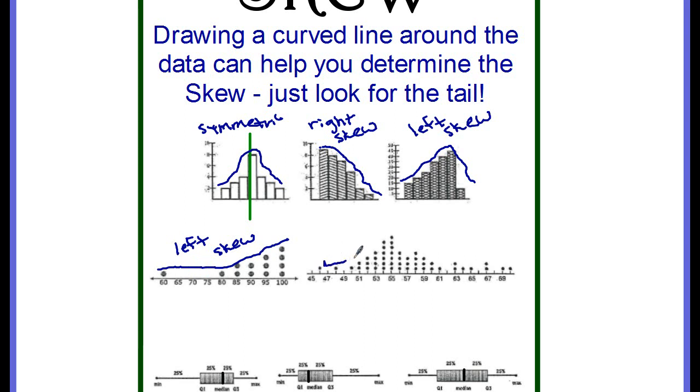If we do this one, you can tell that there's more of a tail on the right side. So this would be a right skew, which means that the majority of the data is on the left.